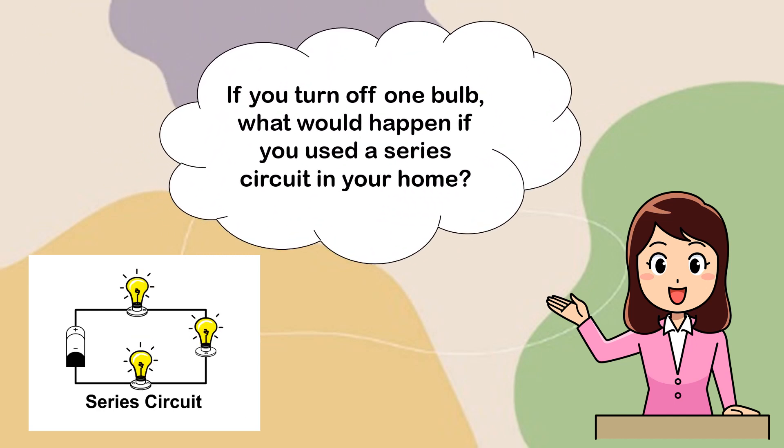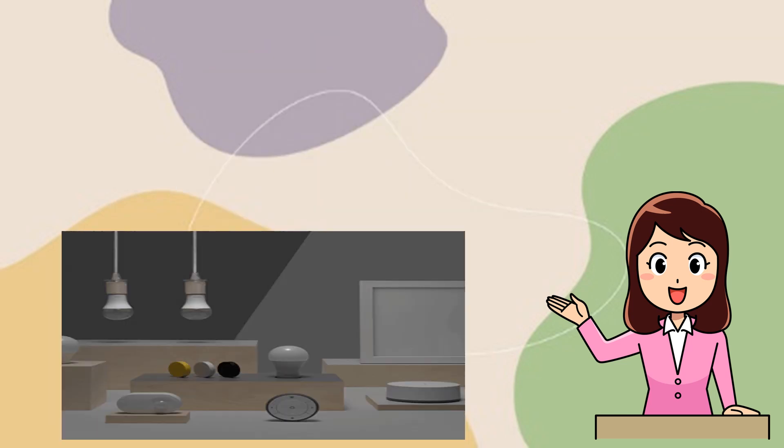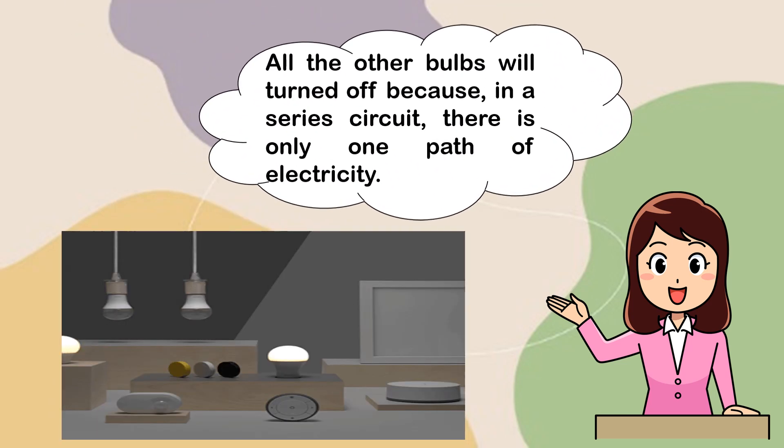If you turn off one bulb, what would happen if you use a series circuit in your home? All the other bulbs will turn off because in a series circuit, there is only one path of electricity.